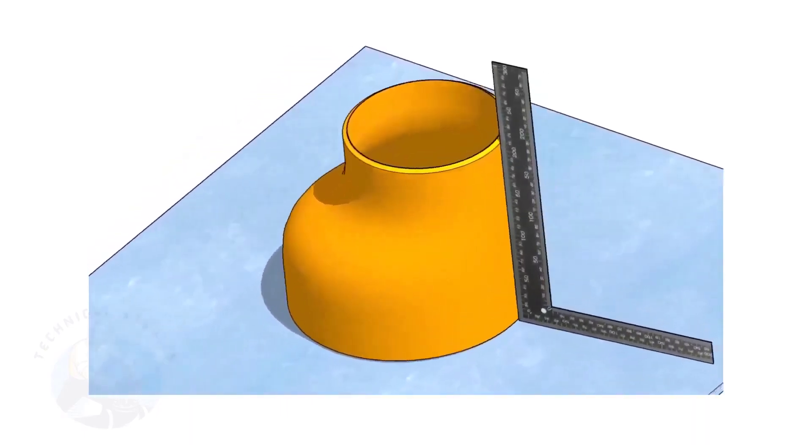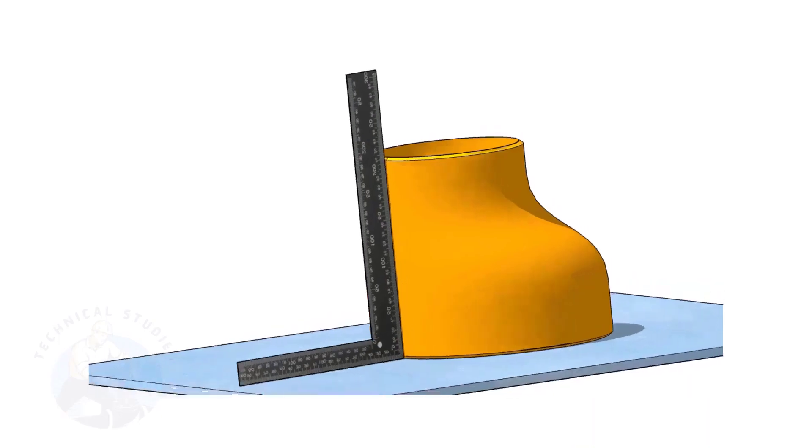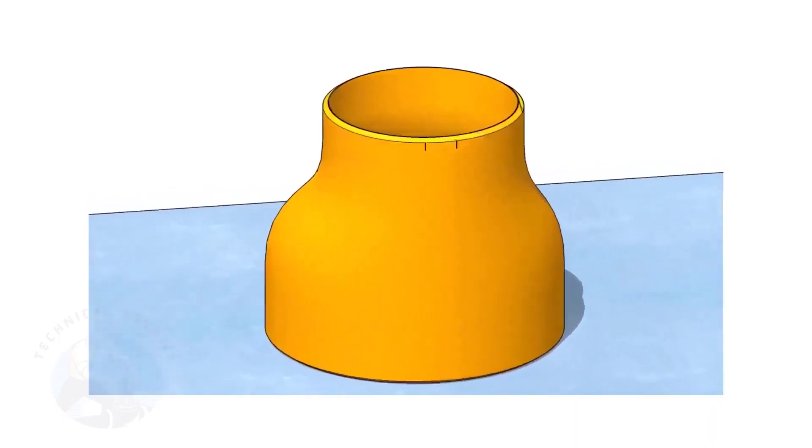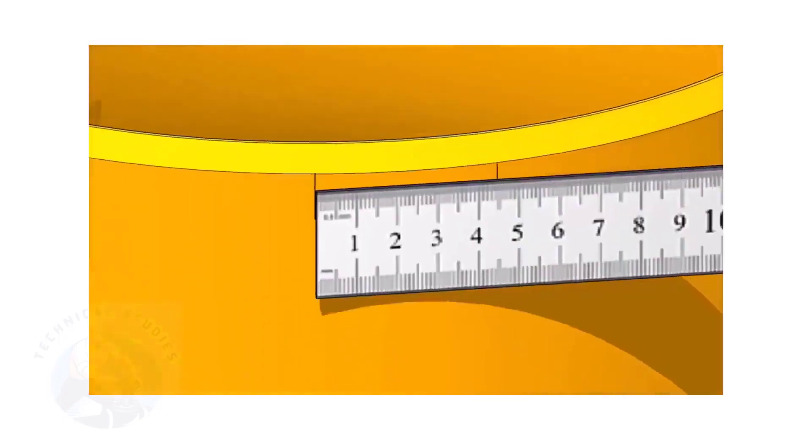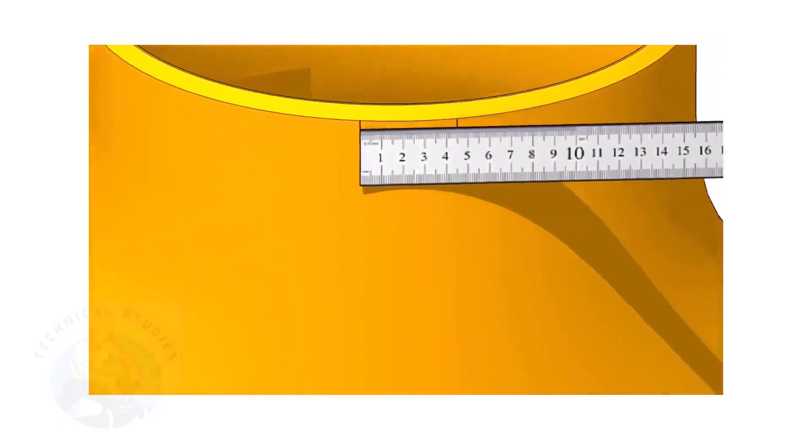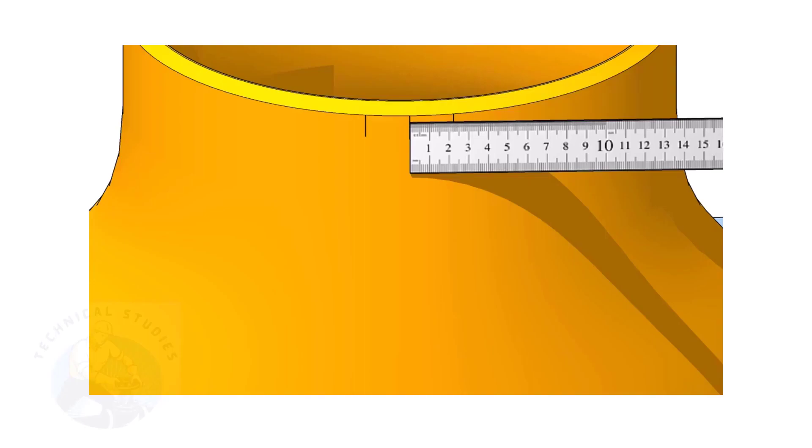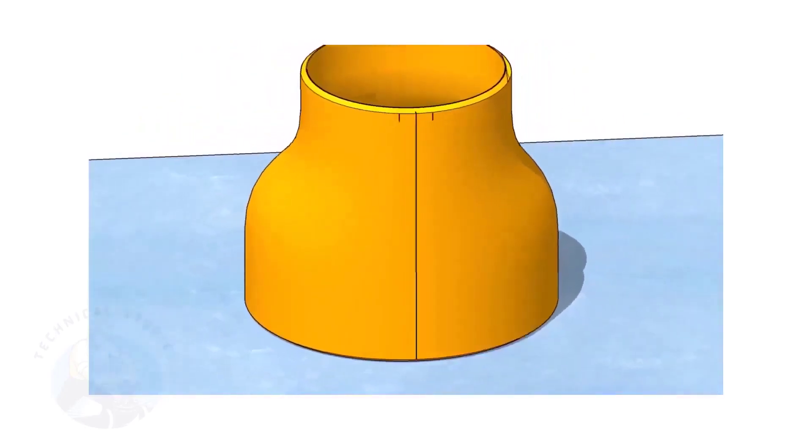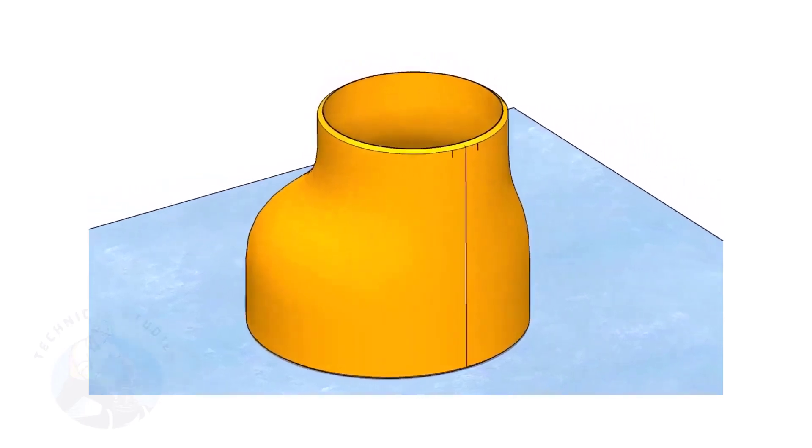It is a good practice marking the center lines of the fittings before starting the fit up, especially an eccentric reducer. I have already posted videos on how to mark the center lines of an eccentric reducer in different methods. In this video, I will show you the method of fitting an eccentric reducer to a pipe that is already fitted to a flange.